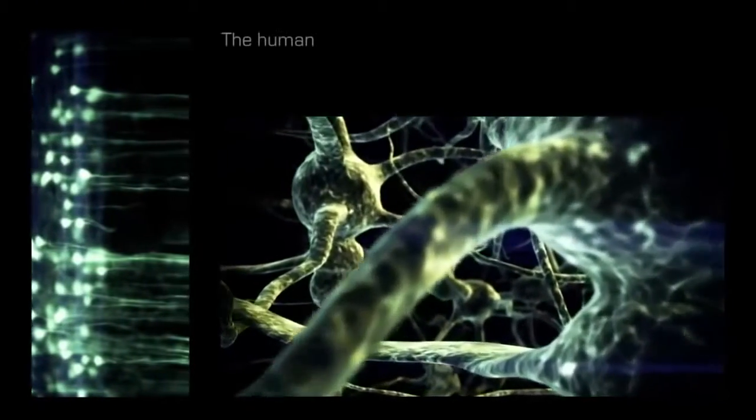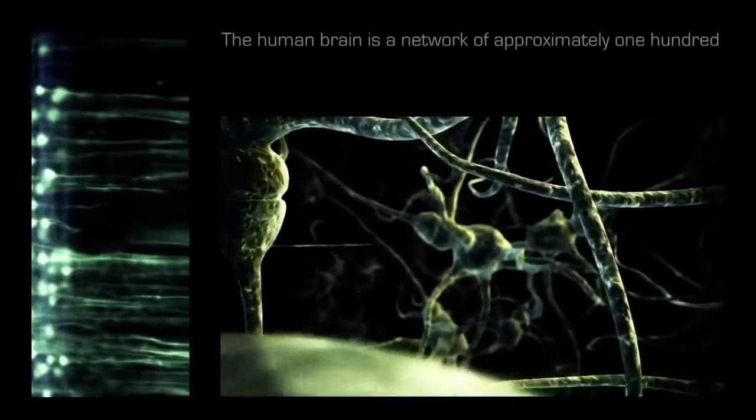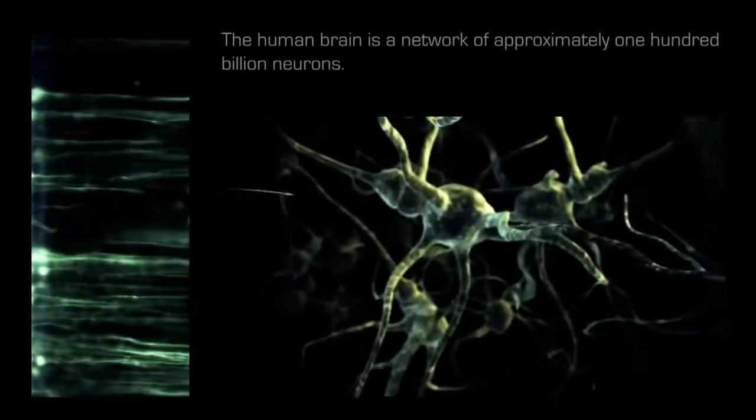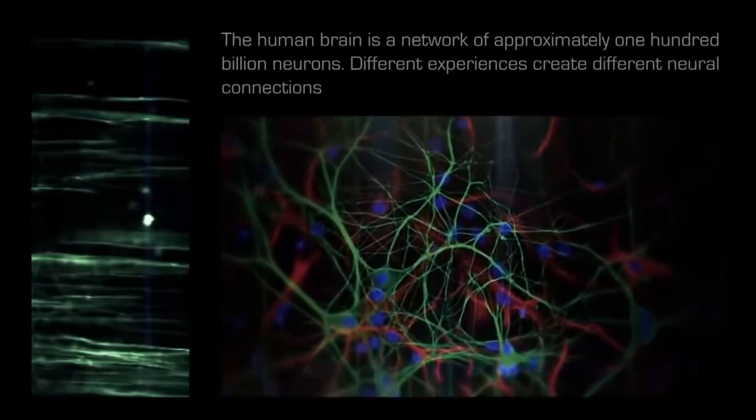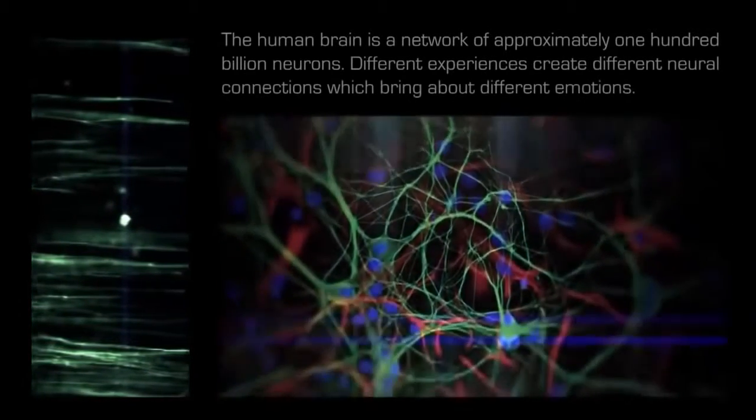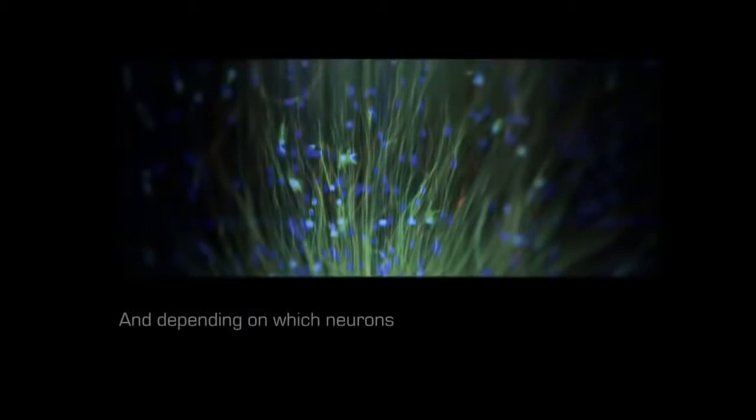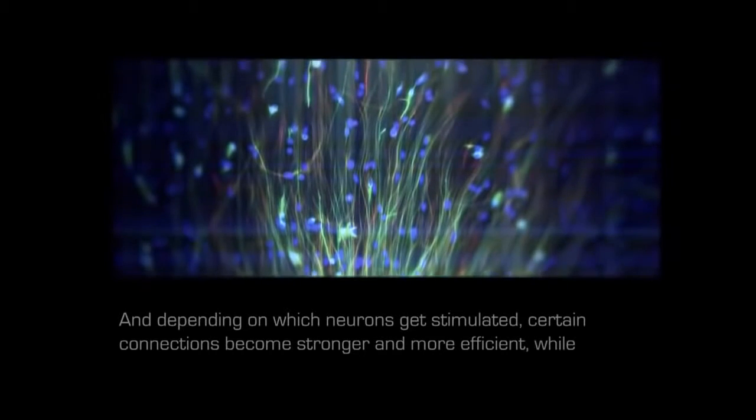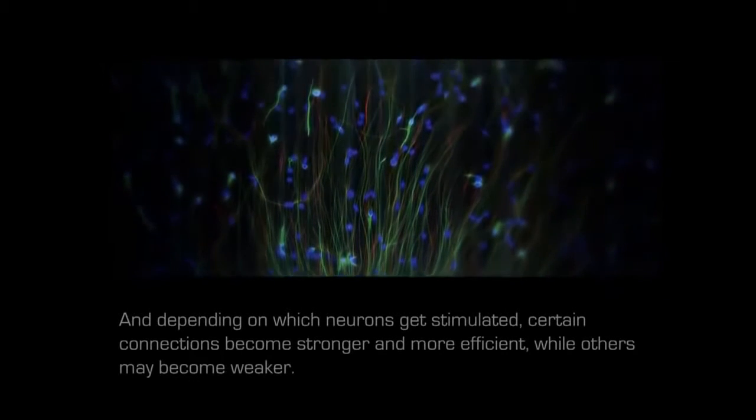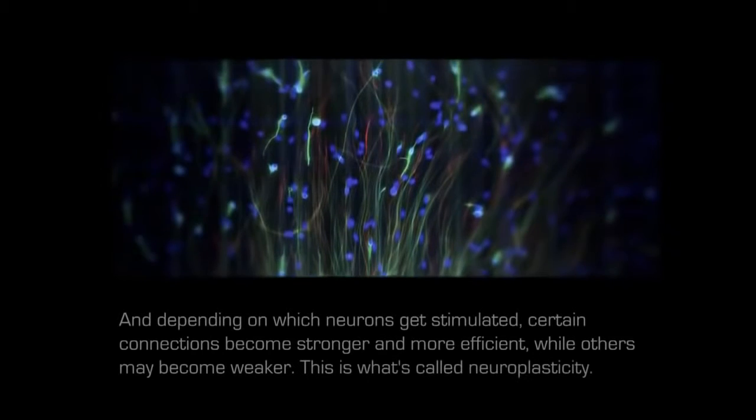The human brain is a network of approximately 100 billion neurons. Different experiences create different neural connections which bring about different emotions. And depending on which neurons get stimulated, certain connections become stronger and more efficient, while others may become weaker. This is what's called neuroplasticity.